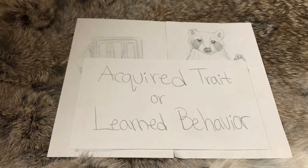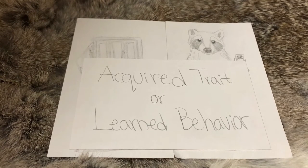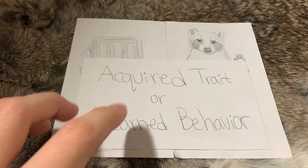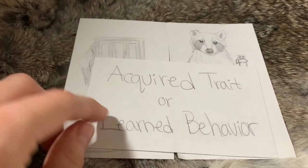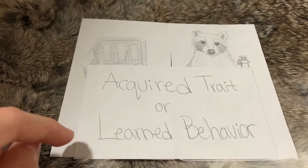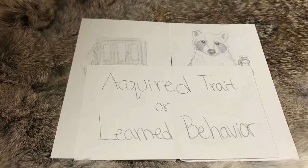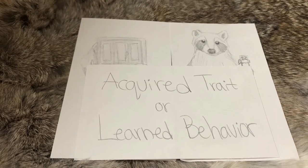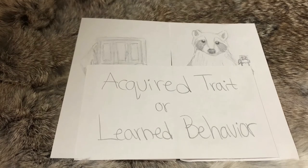Take scars, for example — an animal might get in a fight, but if it has a scar, it is not going to pass that scar down to its children. And if it knows how to do something very particular like using vending machines, it is not going to pass that down to its children unless it teaches them, and then the children have to learn how to do it. You weren't born knowing how to ride a bike — you had to learn how to do that. So that's a learned behavior.